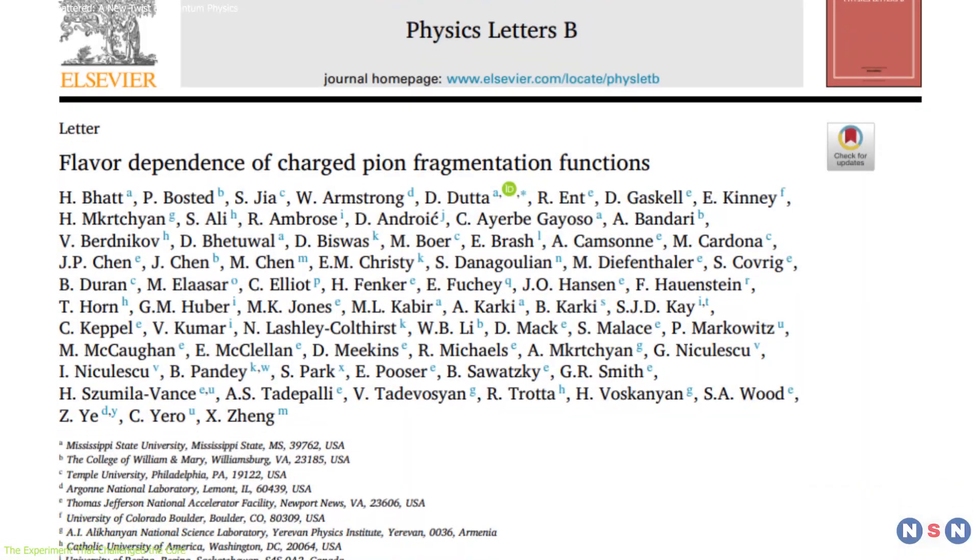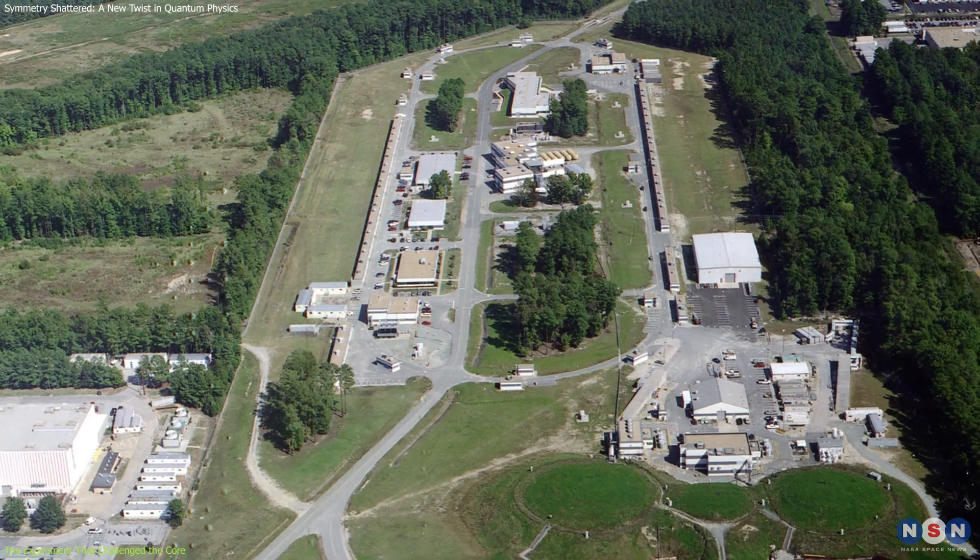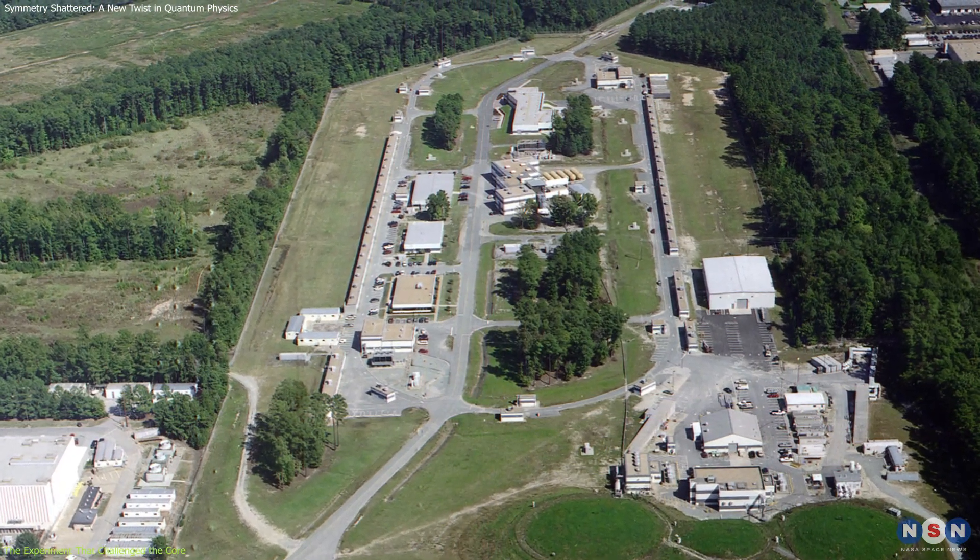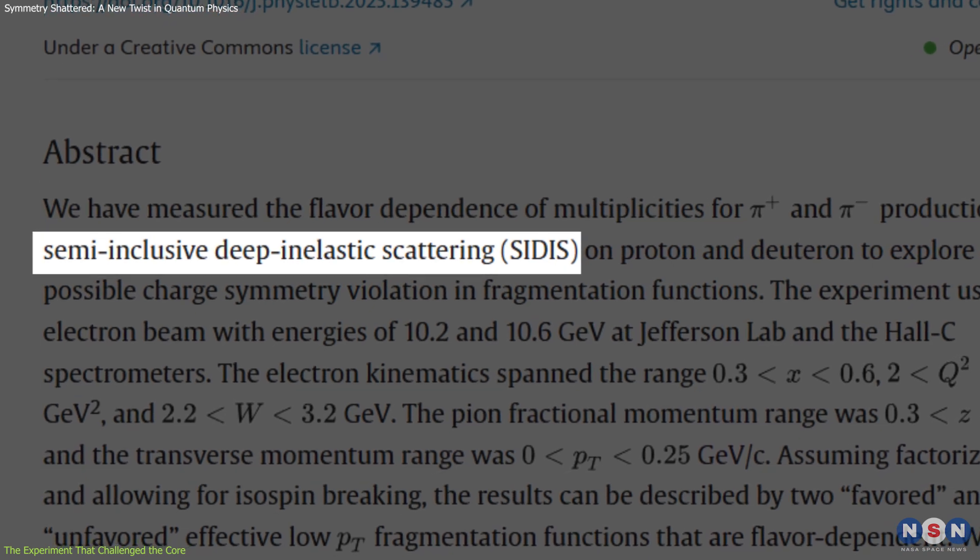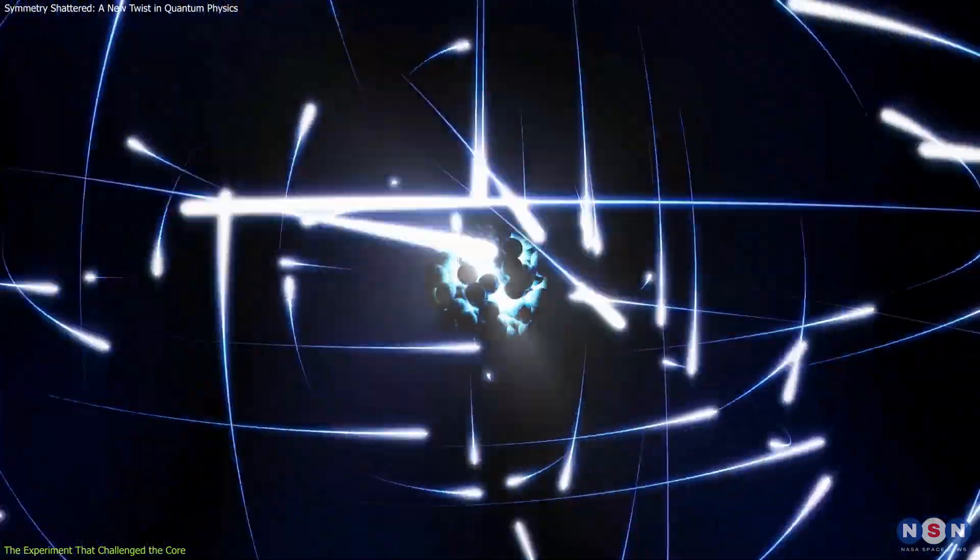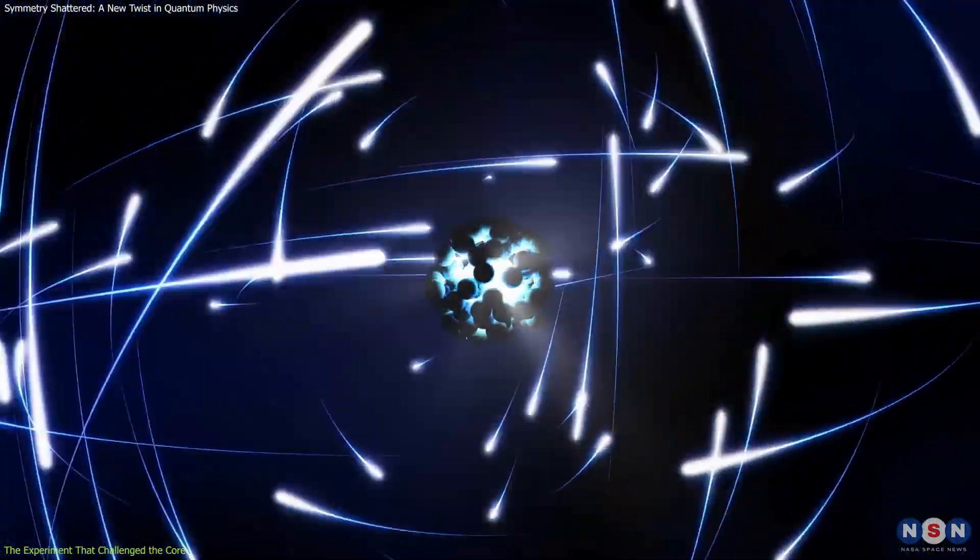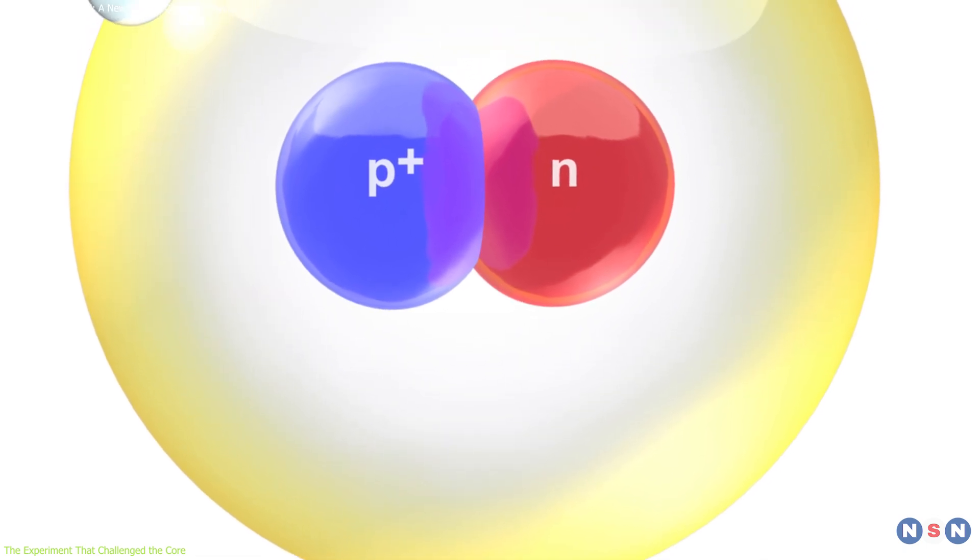At the heart of this groundbreaking research is an experiment conducted at the Thomas Jefferson National Accelerator Facility in Virginia. The team used a technique known as semi-inclusive deep inelastic scattering, where high-energy electrons are fired at protons and deuterons, a type of hydrogen nucleus containing one proton and one neutron.